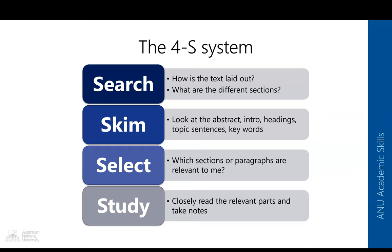It can be daunting to sift through all the literature and decide which is most useful. It's really helpful to apply the 4S system to maximize your reading. The first S stands for Search — do a quick search of how the text is laid out, what the different sections are. Second, Skim for key information such as the abstract, introduction, headings, subheadings, topic sentences, and keywords. Once you've searched and skimmed, decide whether the text is worth reading. If not, put it aside. If it is, Select which sections are most relevant, and then Study those carefully — closely read them, take notes, and think about how that information can be worked into your assignments.